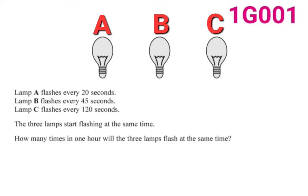The question is about three light bulbs, A, B, and C. Light bulb A flashes every 20 seconds. Light bulb B flashes every 45 seconds, and light bulb C flashes every 120 seconds. Now the three light bulbs start flashing at the same time. The question is asking: in an hour, how many times will the three bulbs flash together?